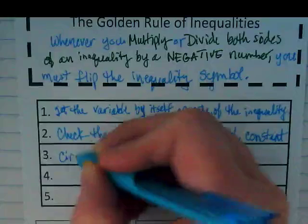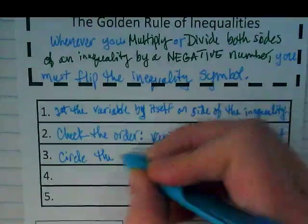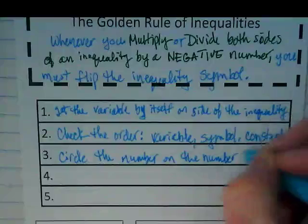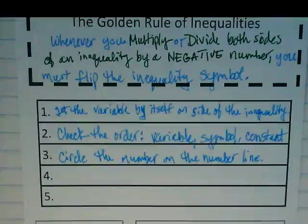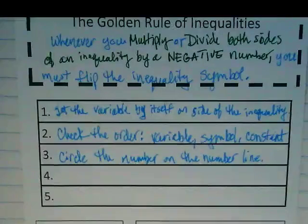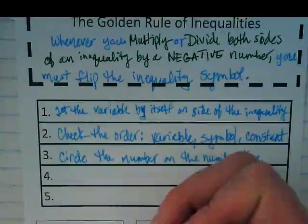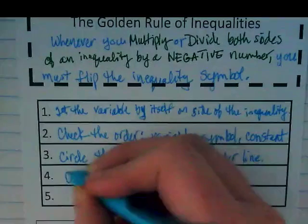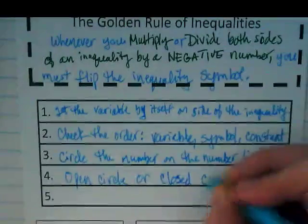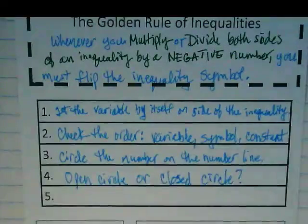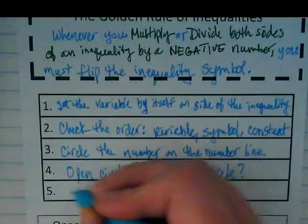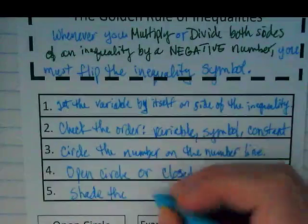Step three. Circle the number on the number line. Step four. You ask yourself a question. I want you to write it down even though it will make no sense to you yet, but it will soon. Open circle or closed circle. And in step five, we shade the graph appropriately.